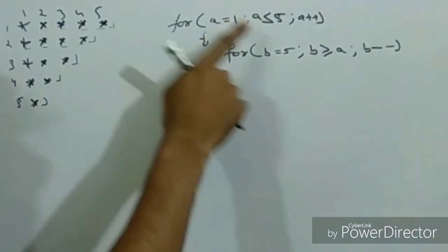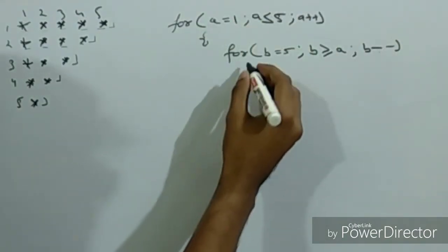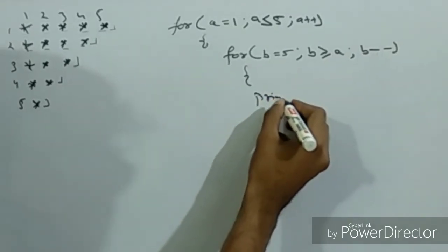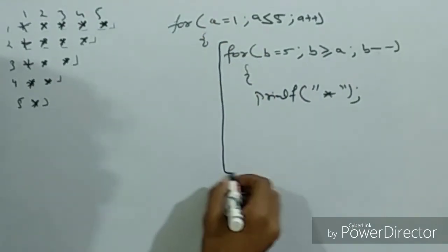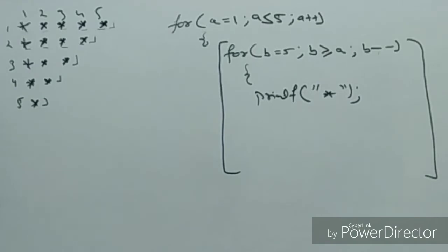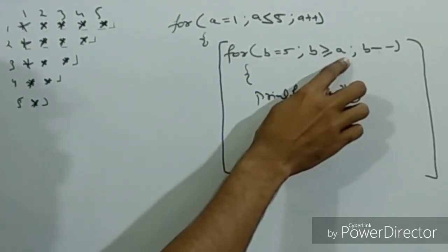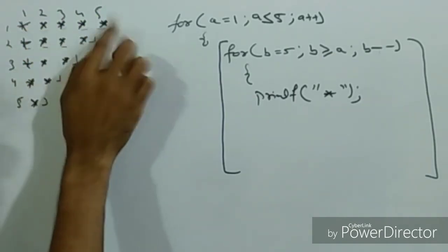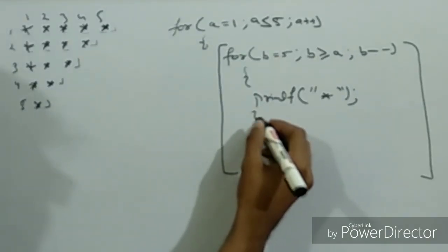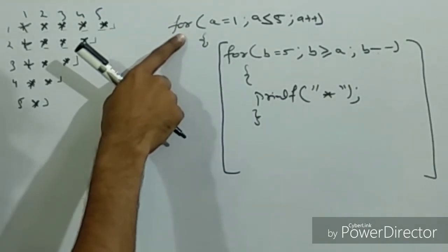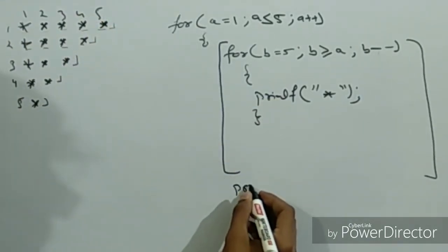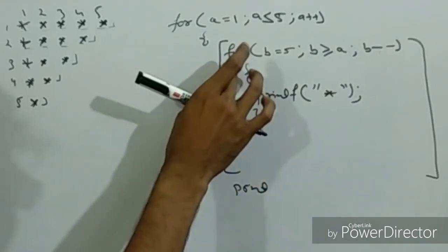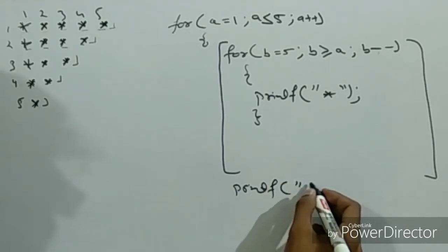Then if a is 1, then b is 5. This is the loop inside the loop. When the first loop starts, it has 5 times star print. So when the first line runs, b is equal to 5. So 1, 2, 3, 4, 5 - print the star. And here I have closed the loop. Then print F for line change.